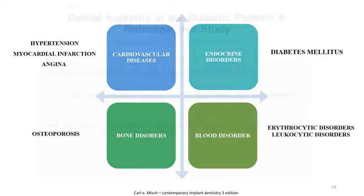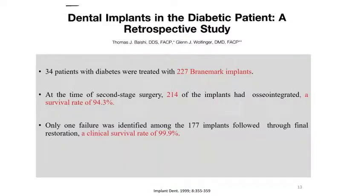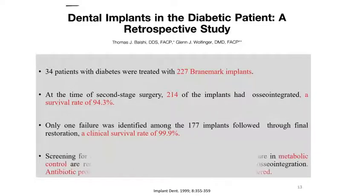In a retrospective study, 34 patients with diabetes were treated with Brånemark implants. At the time of the second stage, 214 implants had integrated and the survival rate was 94 percent. Only one failure was seen among the 177 implants and the final clinical survival rate was 99 percent.